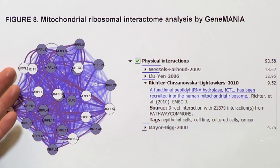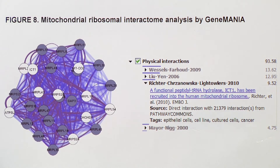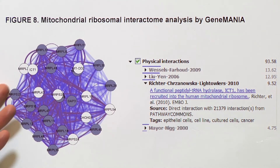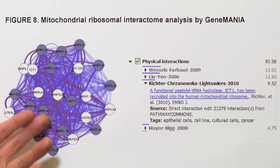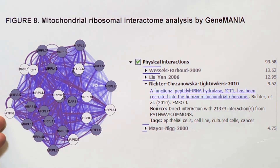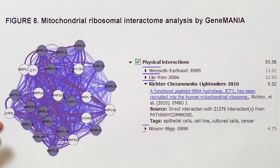A showcase is seen here in figure 8. These are the mitochondrial ribosome proteins displayed — the gray ones are the proteins identified in the data set, whereas the white ones are those that interact with those proteins but are not actually found in the data set. This allows one to find out what crosstalk is going on amongst the proteins that you are interested in.